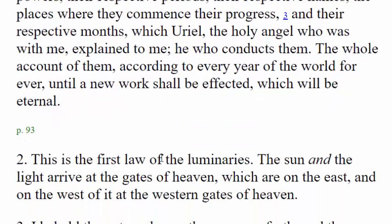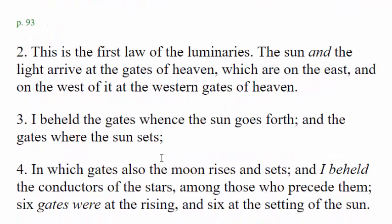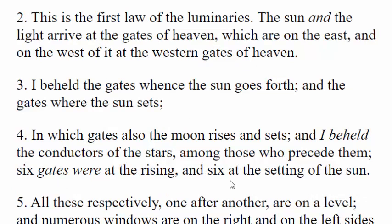There are laws that govern those lights in the firmament. The first law of the luminaries is found in verse 2 of the book of Enoch, chapter 71, and it says: 'This is the first law of the luminaries — the sun and the light arrive at the gates of heaven, which are on the east and on the west of it, at the western gates of heaven.' So the first law is that the sun and its light arrive at the western gates of heaven. What we really need to understand here are these gates, because these gates — which represent the stars — also tell us what season or what time we're in.